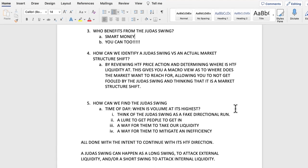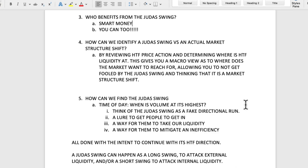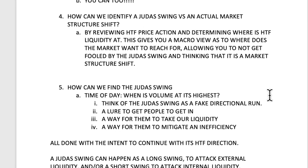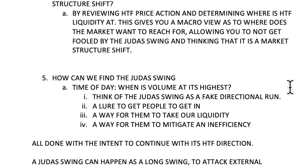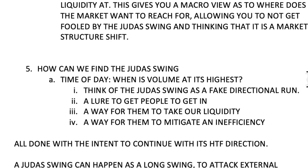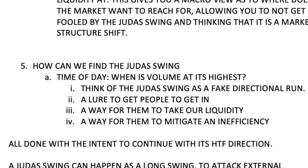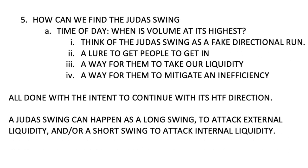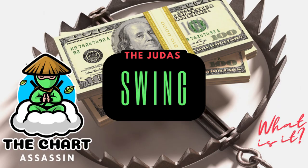Think of the Judas Swing as a fake directional run. Think of it as a lure to get people to get in. Think of it as a way for them to take out liquidity. Think of it as a way for them to mitigate or reach to an inefficiency — all done with the intent to continue with the higher timeframe direction. A Judas Swing can happen as a long swing attacking an external liquidity area before it continues, or it can be a short attack targeting internal liquidity before a continuation.